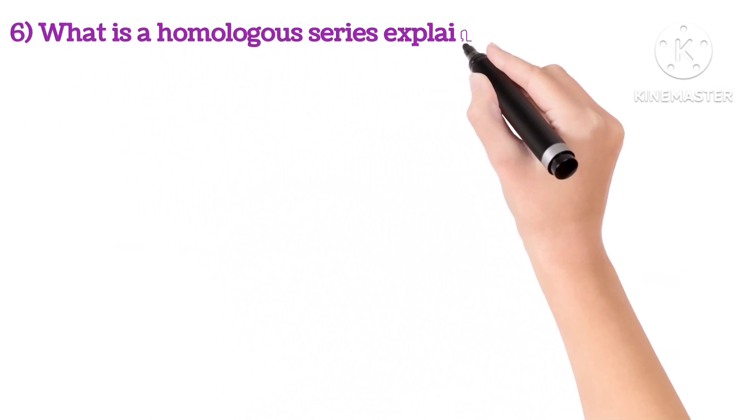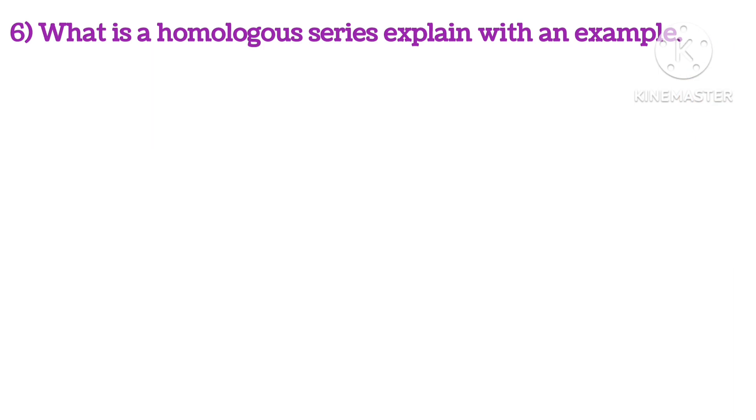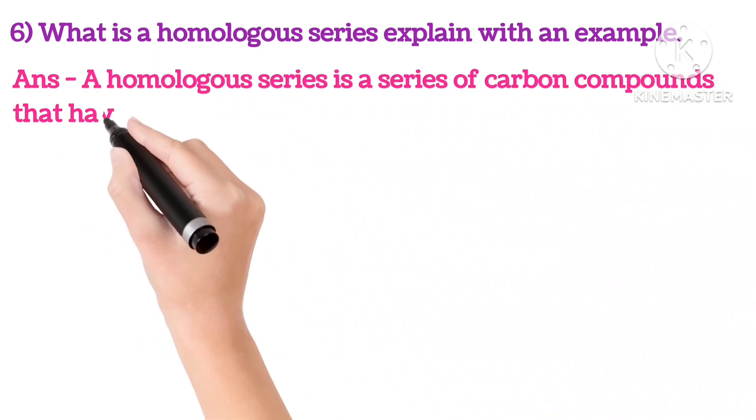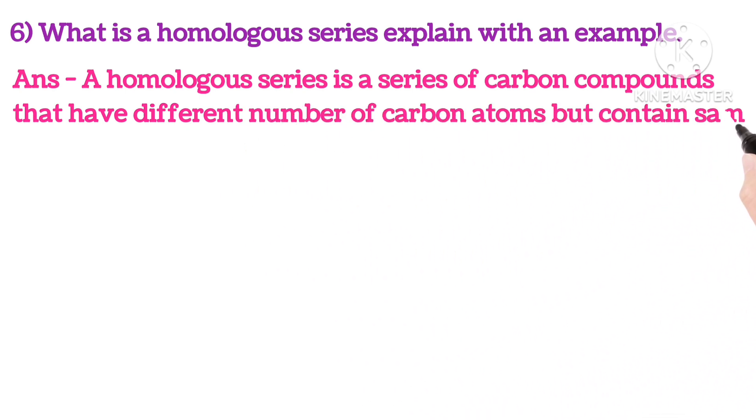Sixth, what is homologous series? Explain with an example. A homologous series is a series of carbon compounds that have different number of carbon atoms but contain the same functional group.